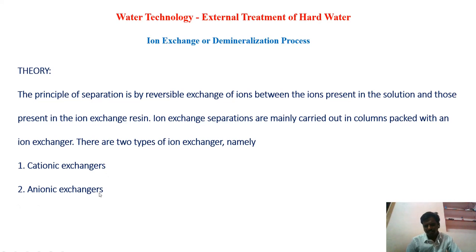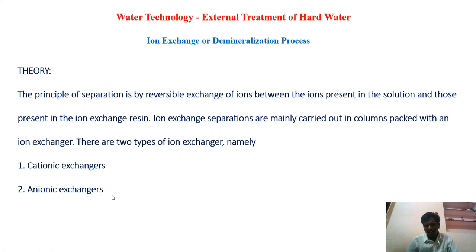Cation exchangers can be used to remove calcium and magnesium ions from the water. Anion exchangers can be used to remove chlorides, nitrates, and sulfates from the water. So in this process, we are removing both cations and anions.